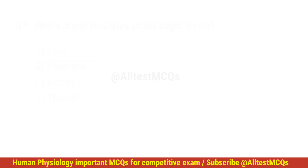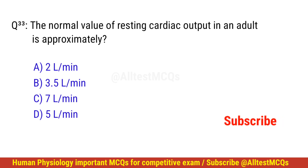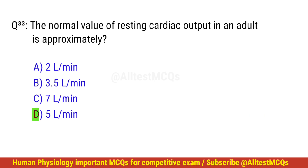Question number 33. The normal value of resting cardiac output in an adult is approximately? The right option is D: Five liters per minute.